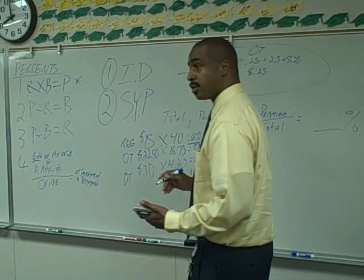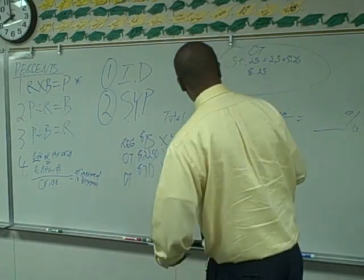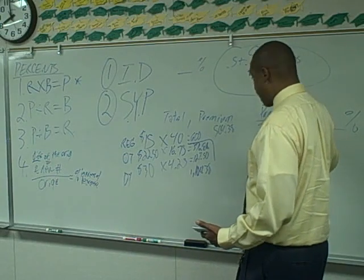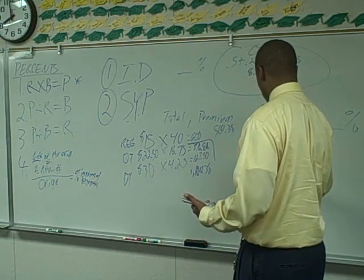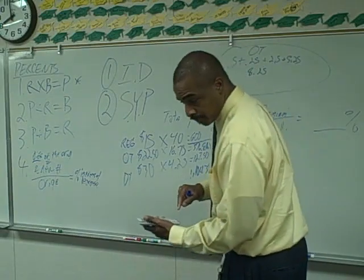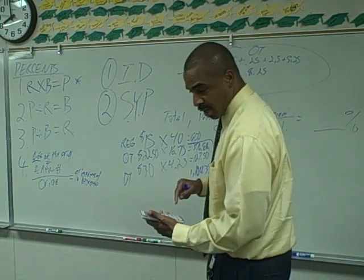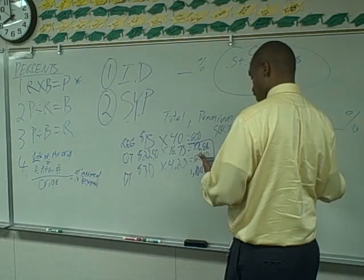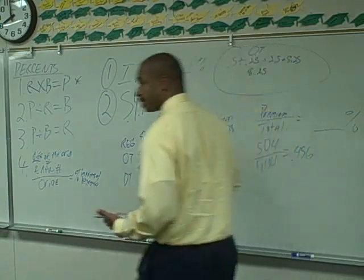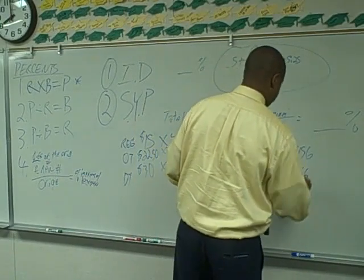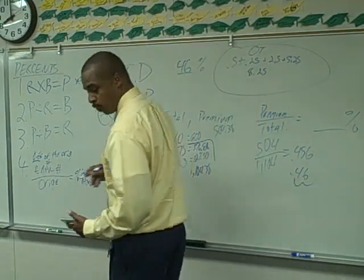So now we've already set it up. Premium pay $504.38 divided by total pay $1,104.38 — we'll leave the decimals out: 504 divided by 1,104 equals 0.456. That 6 rounds up the 5, so we get 0.46. Converting that to a percent — move the decimal two spaces to the right — gives us 46%. So premium pay is 46% of Pearl's total salary.